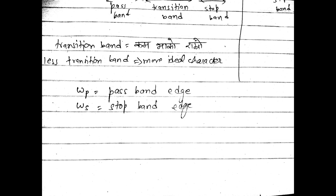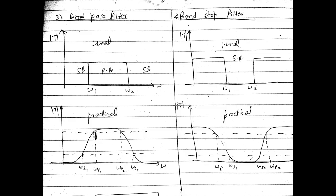Here, ωp is the pass band edge and ωs is the stop band edge. The transition band lies between them. The smaller the transition band, the closer the filter is to ideal behavior. Band pass and band stop filters are combinations of low pass and high pass filters. In the practical band pass filter response, the output is constant only from ωp1 to ωp2, with transition bands at both sides near ωs1 and ωs2.